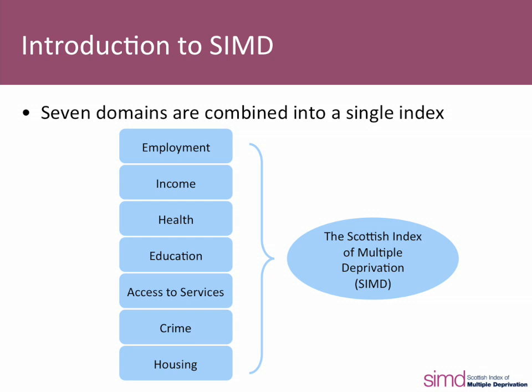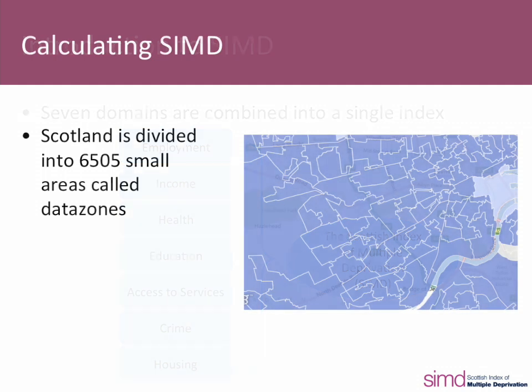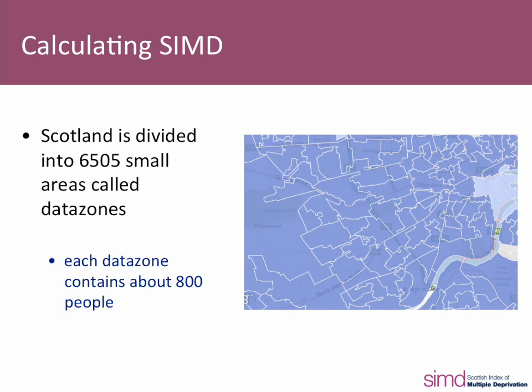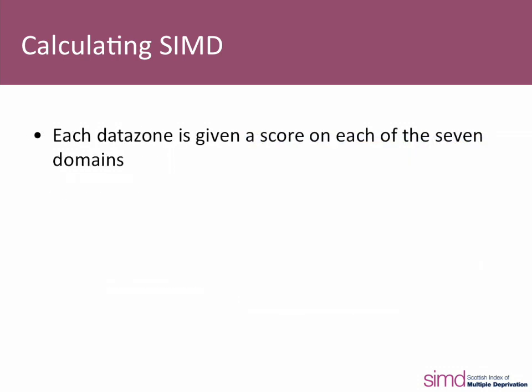The SIMD focuses on areas known as data zones. Across Scotland there are a total of 6,505 data zones, which have an average of 800 people living in each of them. They're designed to group together people and households that are similar so that comparisons can be made between them. Each data zone is given a score on each of the seven domains, which are then combined to form the overall index.